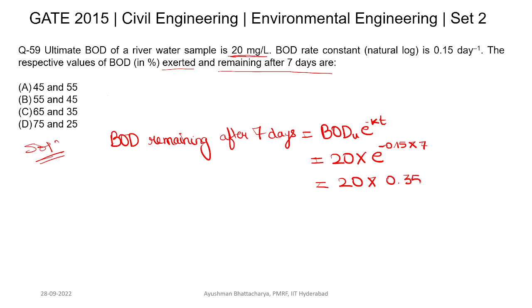This calculation gives us 20 × 0.35. Now, since the question asks for the answer in percentage, we need to divide BOD remaining after seven days by the ultimate BOD.